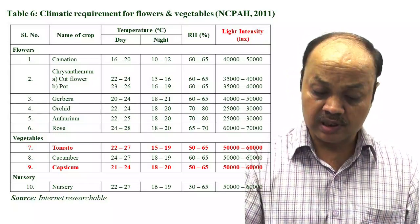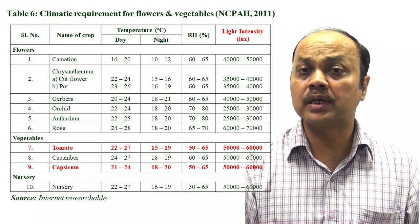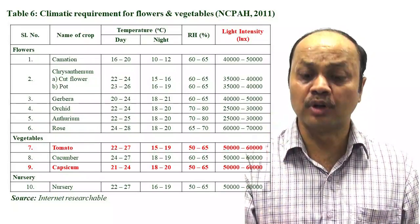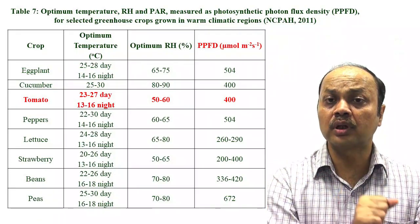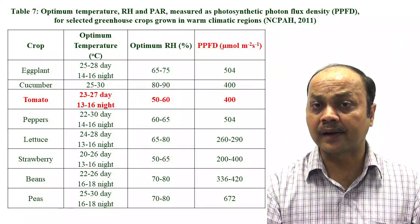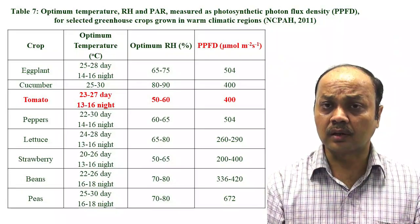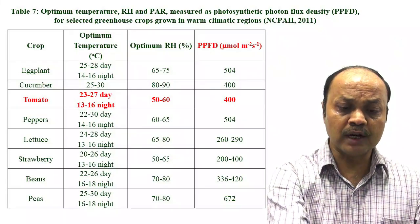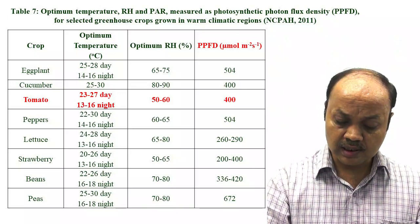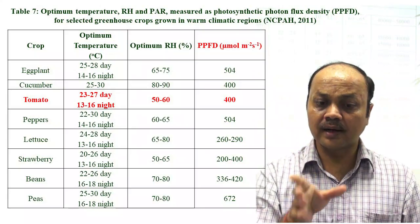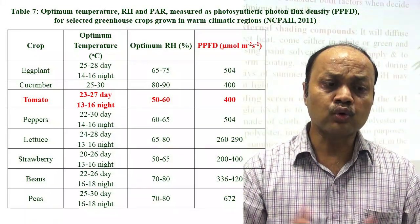Photosynthetic photon flux density is given in another table, whereas the earlier table used lux intensity measured by a lux meter for visible light. In crop growing, you are more concerned about the PAR range — 400 to 700 nanometers. For tomato, the optimum temperature and RH are given, but here light intensity is expressed in micromoles per meter squared per second, not lux — that is a very important distinction.